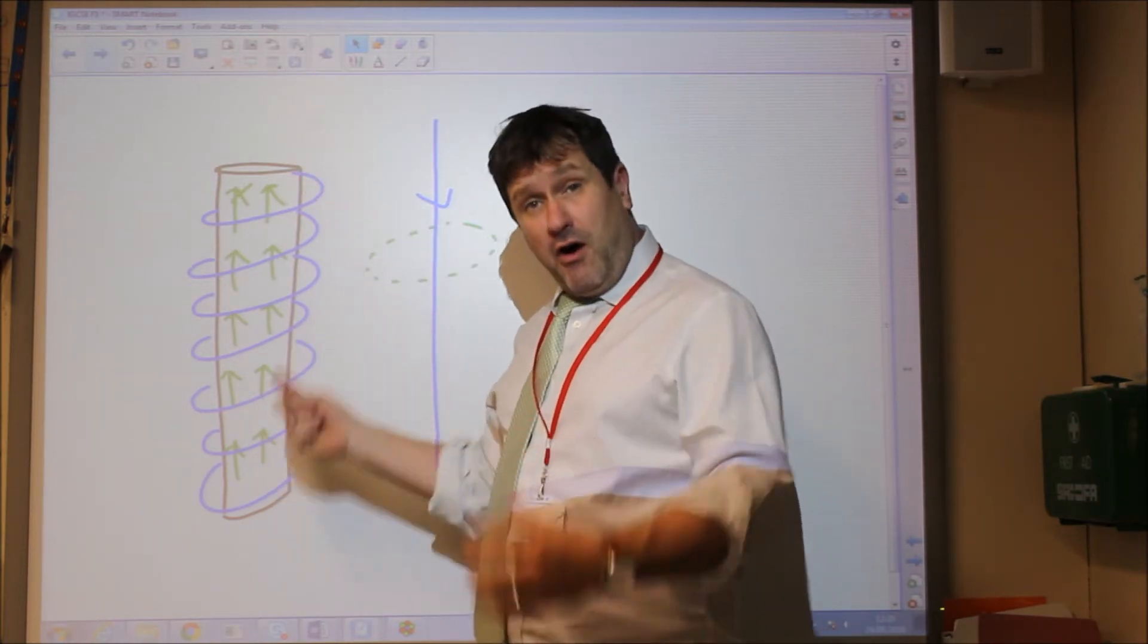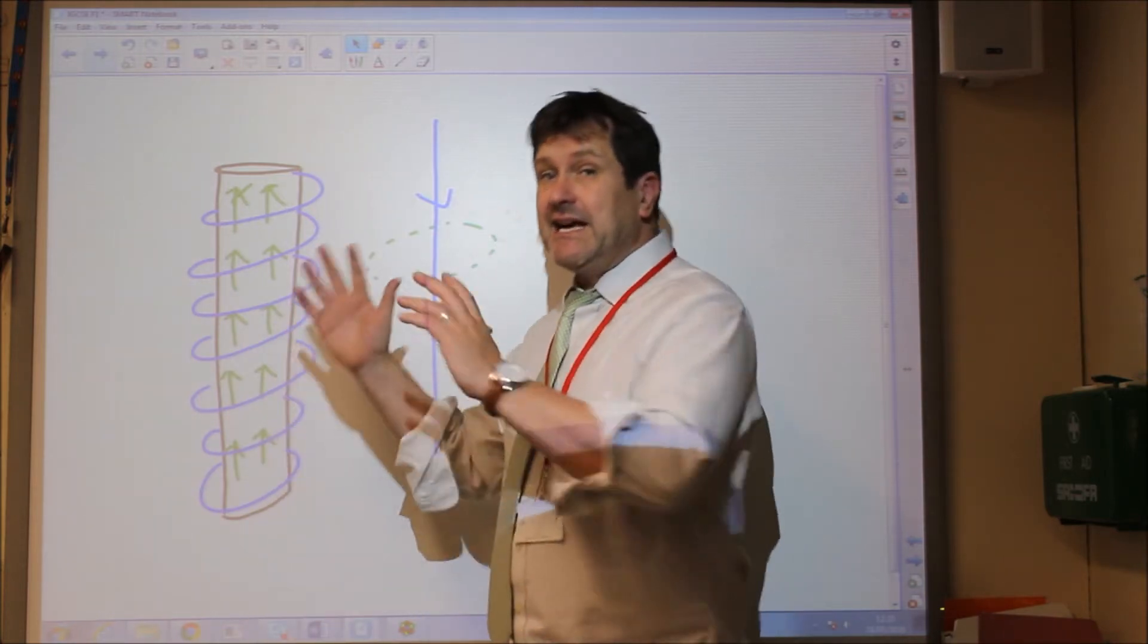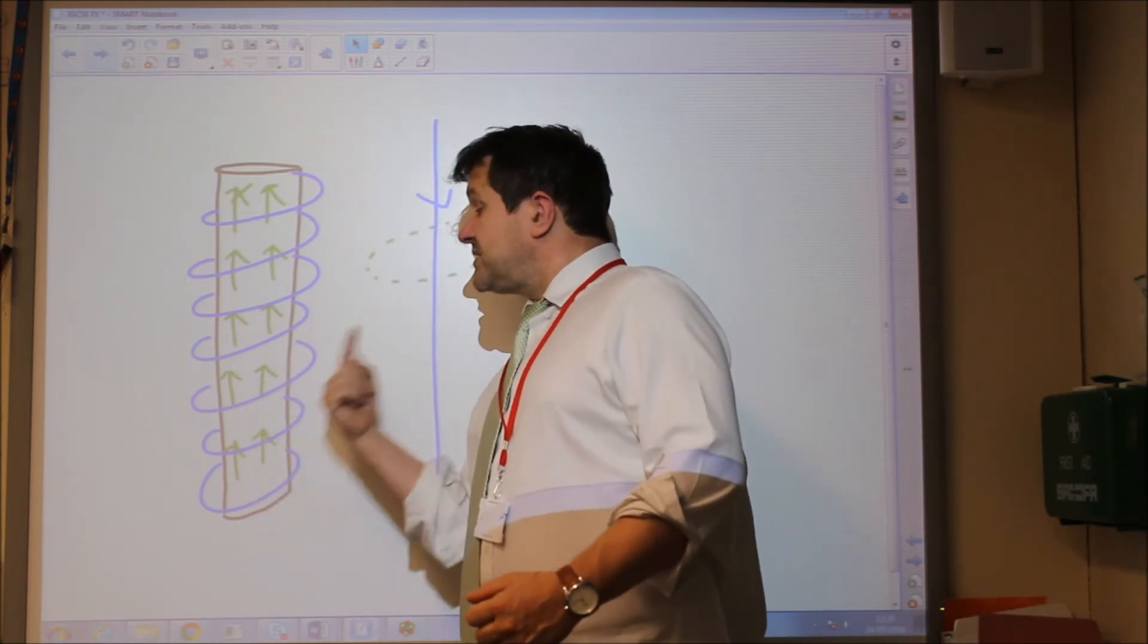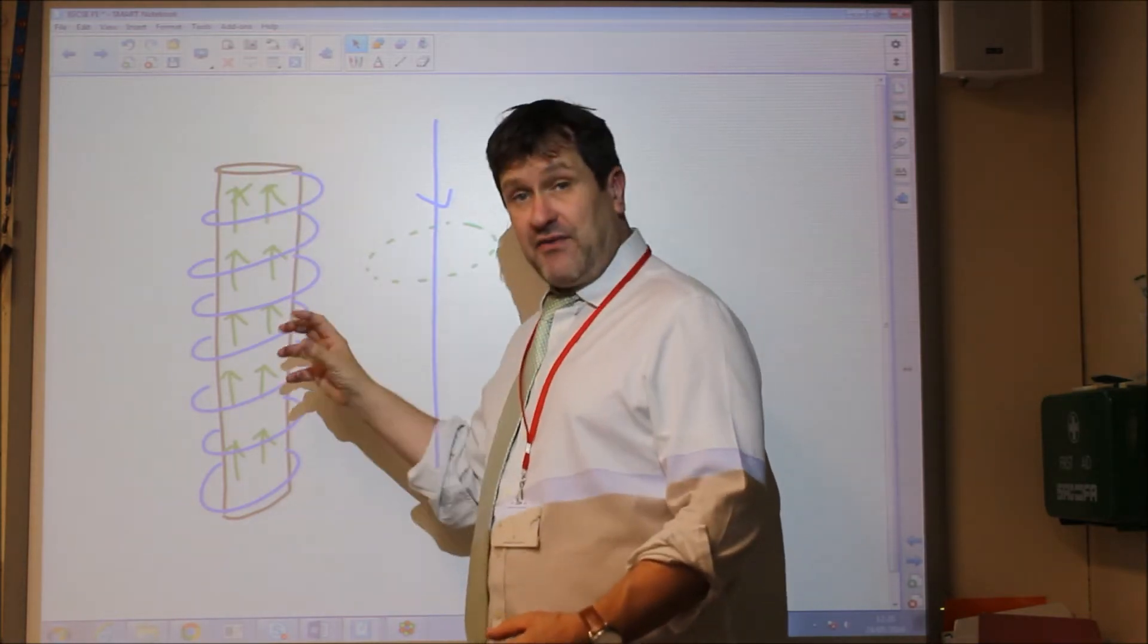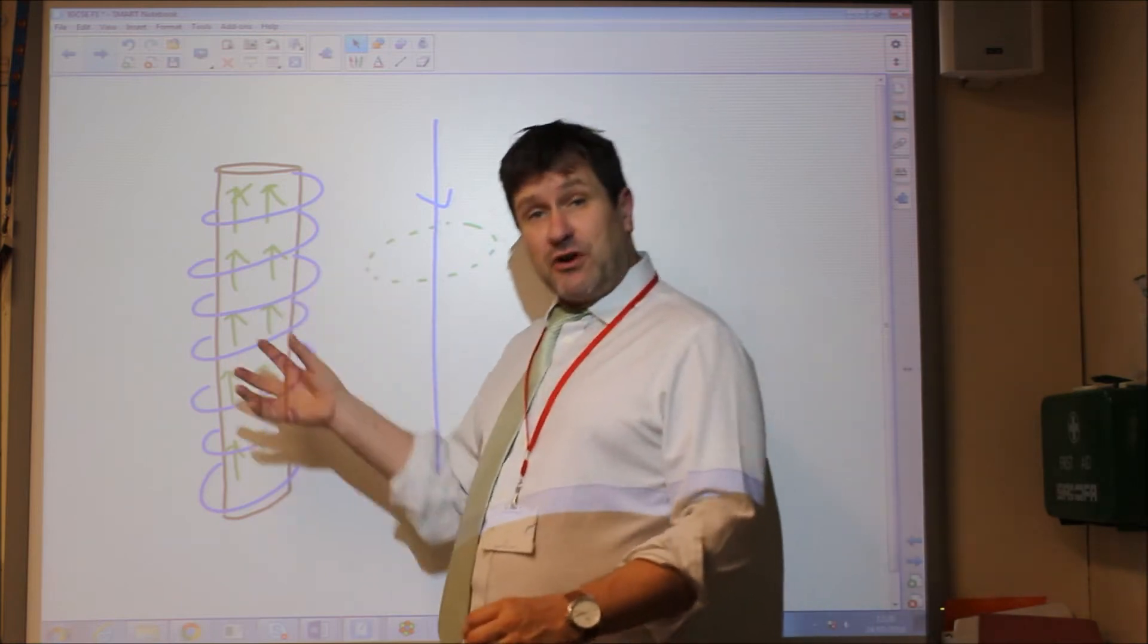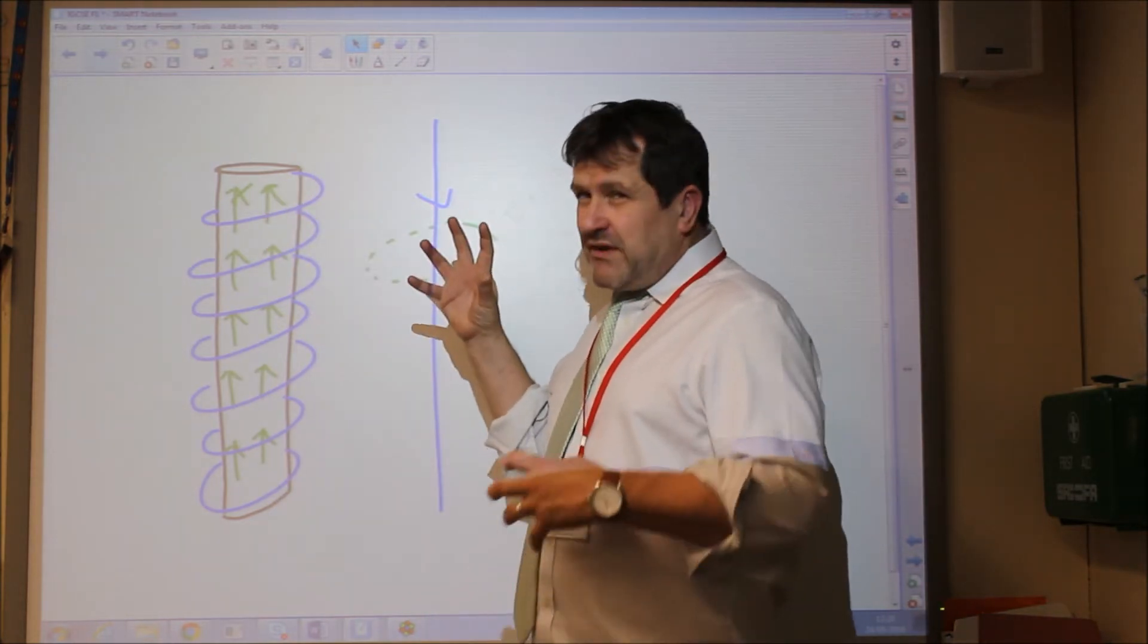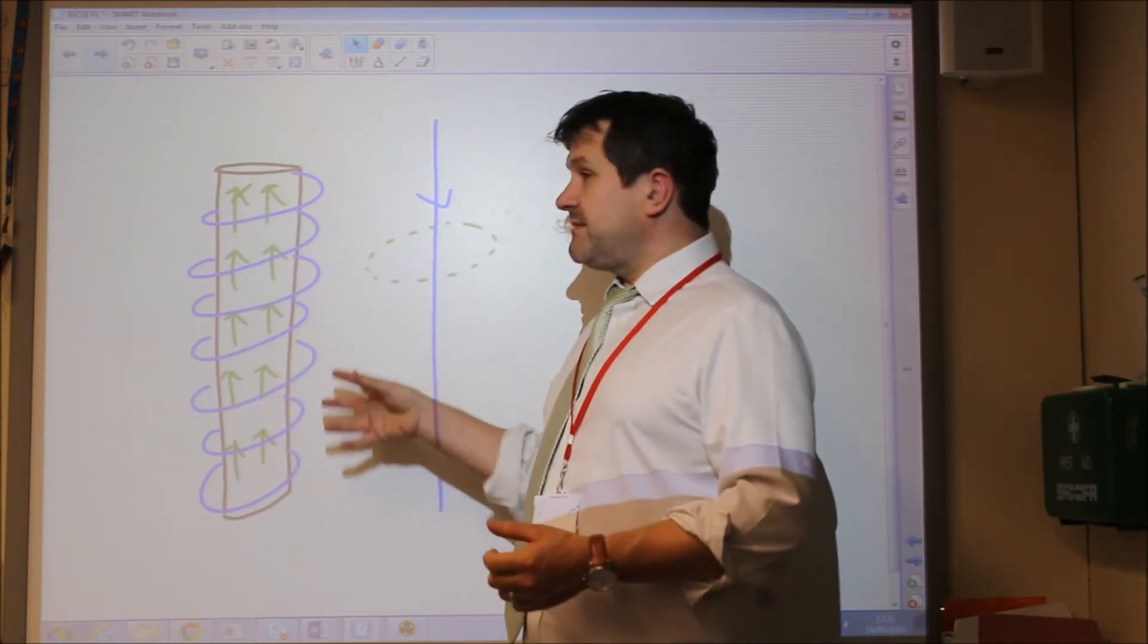But when the current is turned off, the iron core is no longer magnetic as the dipoles return to their original position. So, an electromagnet works because when the current is going around the iron core, it's magnetic, and when you turn the electricity off, it's no longer magnetic. You can make it stronger by increasing the current or increasing the number of turns or the size of the iron core. But they're really useful because instead of a permanent bar magnet, this can be turned on and off.